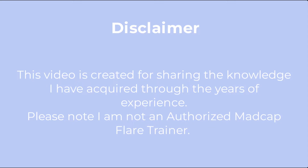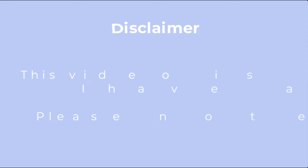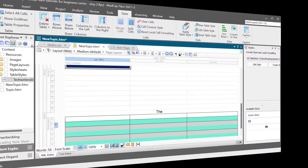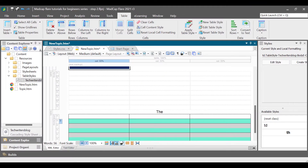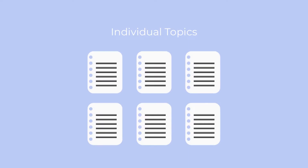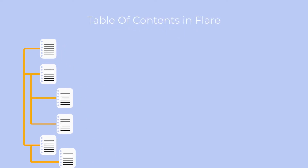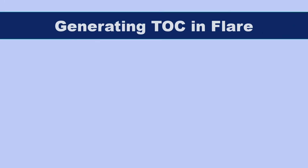To start, let us open the project we created in our previous tutorial. Until now, we were working on individual topics. It is time to give some structure to your content and arrange the topics we created so far. In the Flare application, a Table of Contents or TOC is a file that provides flow to your content by arranging topics. There are two ways of arranging topics.